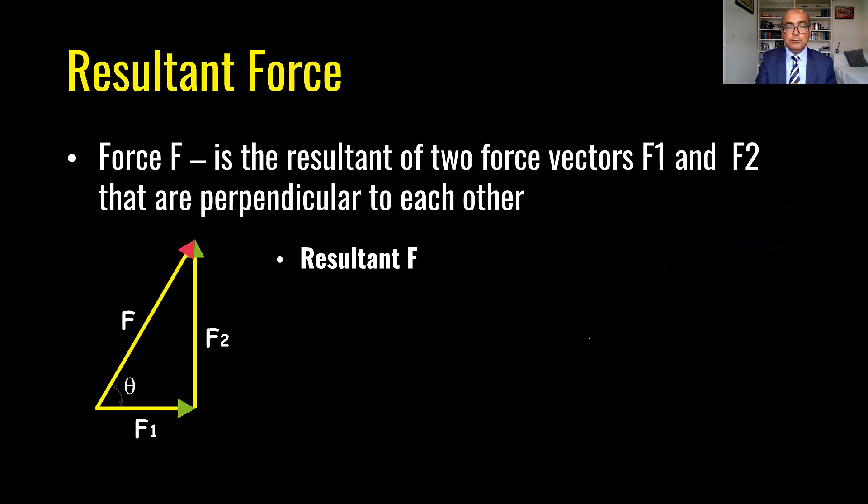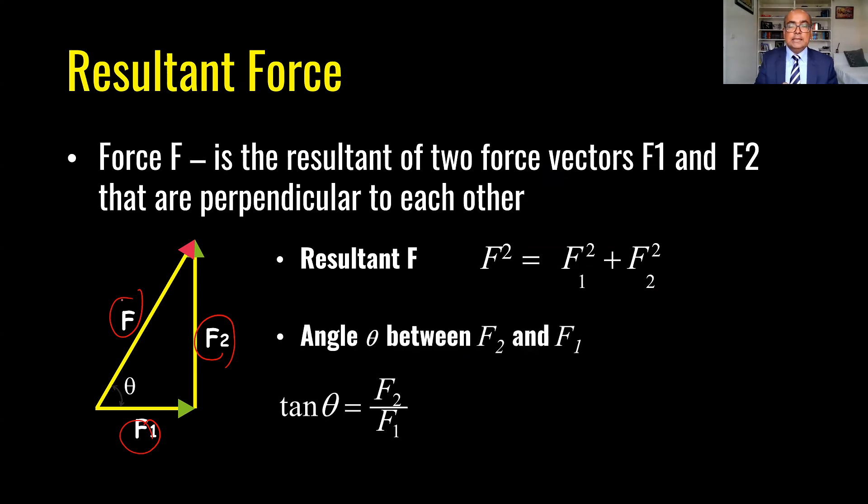How do we work out resultant force? If two forces are given to us F2 and F1 the resultant is simply hypotenuse. The resultant force F square equals F1 square plus F2 square and the angle between these two forces if the forces are given can be found out by F2 over F1 similar to what we did earlier which was opposite divided by adjacent.